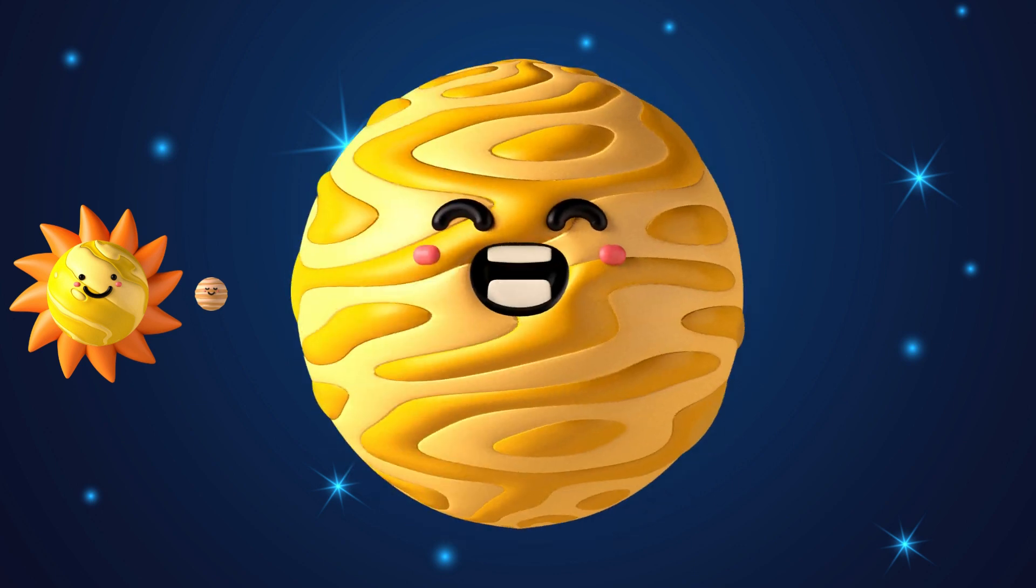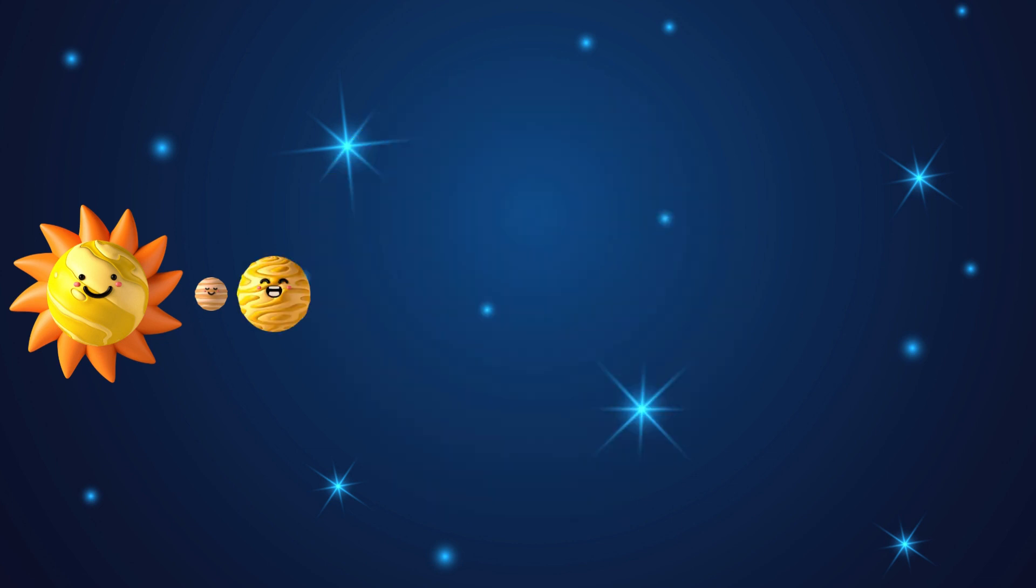The second planet from the sun is Venus. He's the hottest and apart from the sun, the brightest planet.